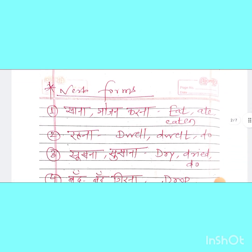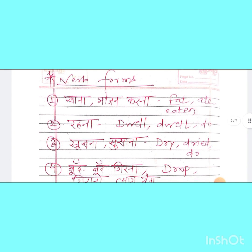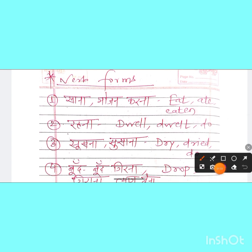इसके आगे हैं कुछ verb forms. तो देखते हैं: खाना या भोजन करना — Verb 1: eat, Verb 2: ate, Verb 3: eaten. रहना — dwell, dwelt, dwelt.